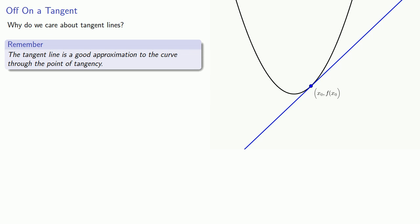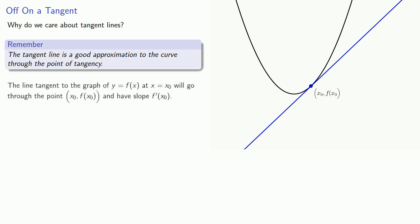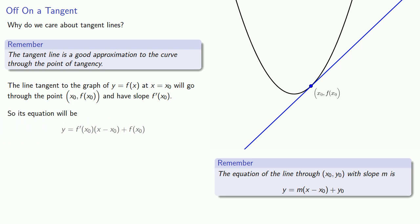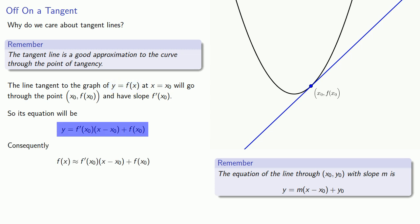The line tangent to the graph of y equals f of x at x equals x₀ will go through the point (x₀, f(x₀)) and have slope f′(x₀). Since we know how to write the equation of a line given a point and the slope, we can write the equation of the tangent line. But if the tangent line approximates the curve, then the equation of the tangent line will be an approximation for the function itself — as long as our x value is close to x₀, our point of tangency.